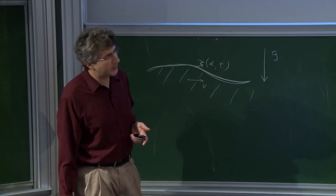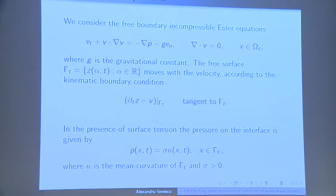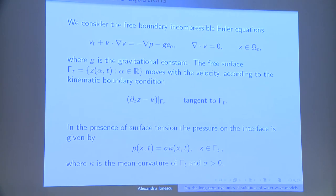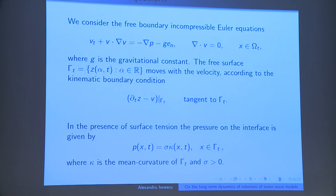If one just looks at the system this way, even making sense of what evolves takes a little thought. The naive way is to take the divergence — the first equation gives an equation for delta of the pressure. If you know the velocity at some time, you get an equation for delta of the pressure, and since pressure is also prescribed on the boundary, you get the pressure at that time.